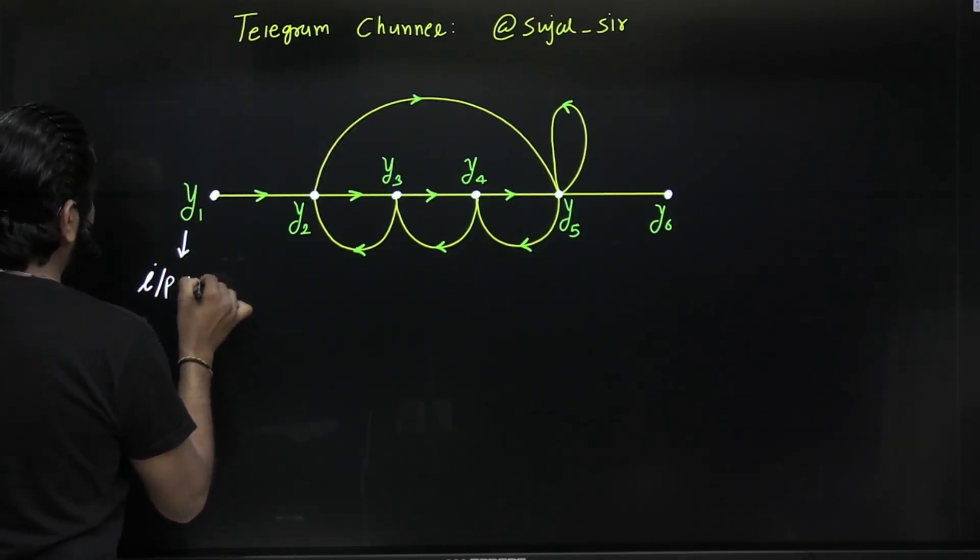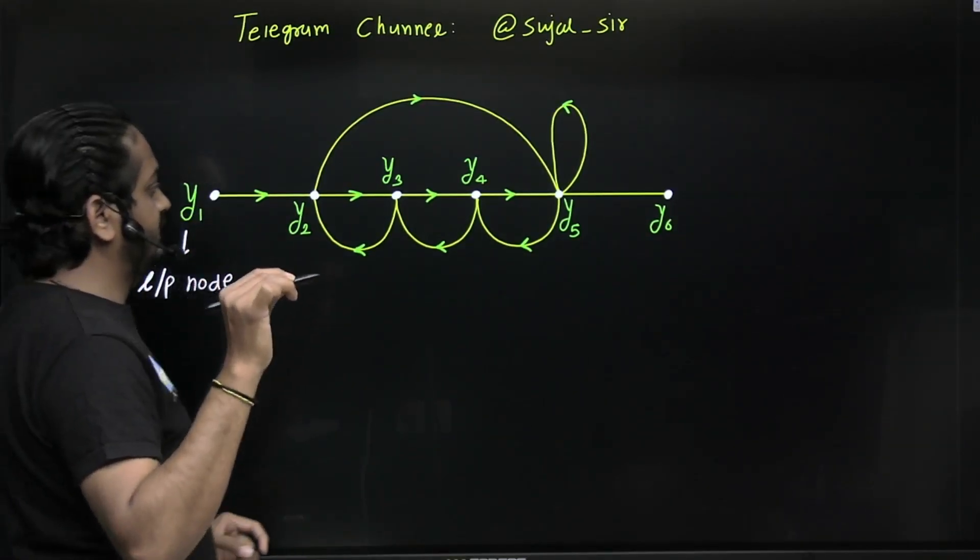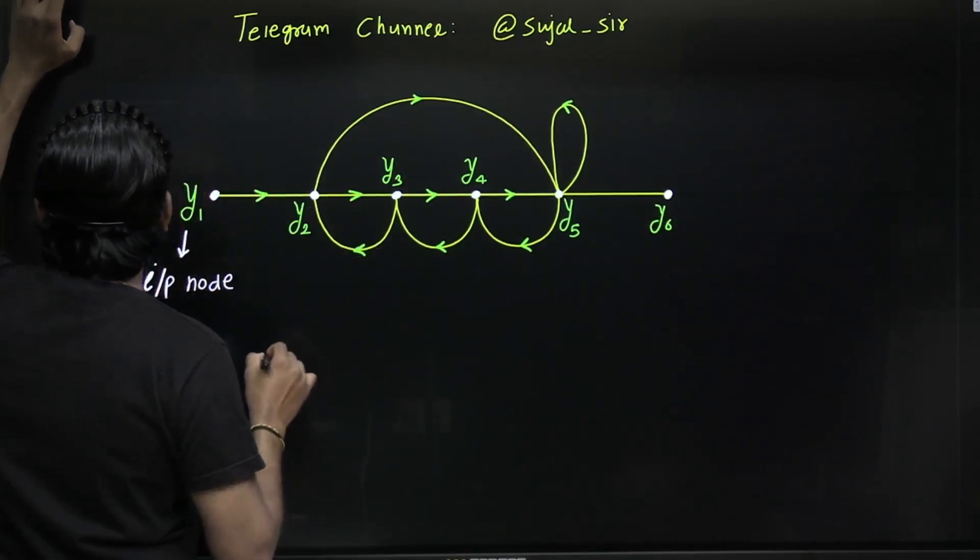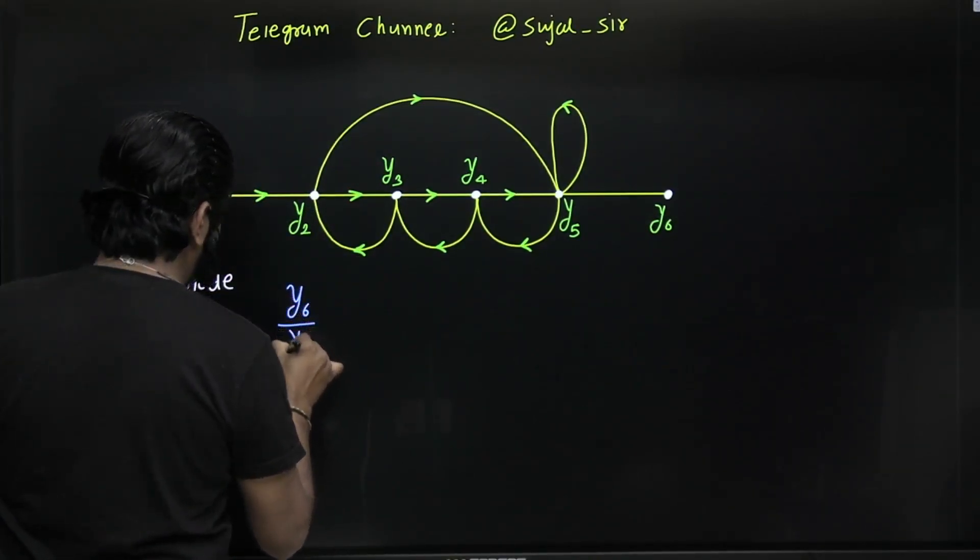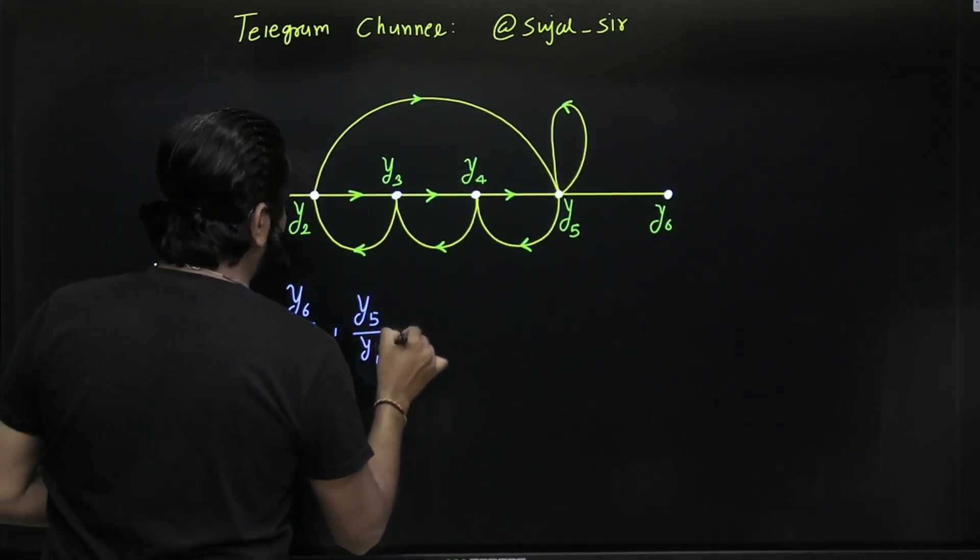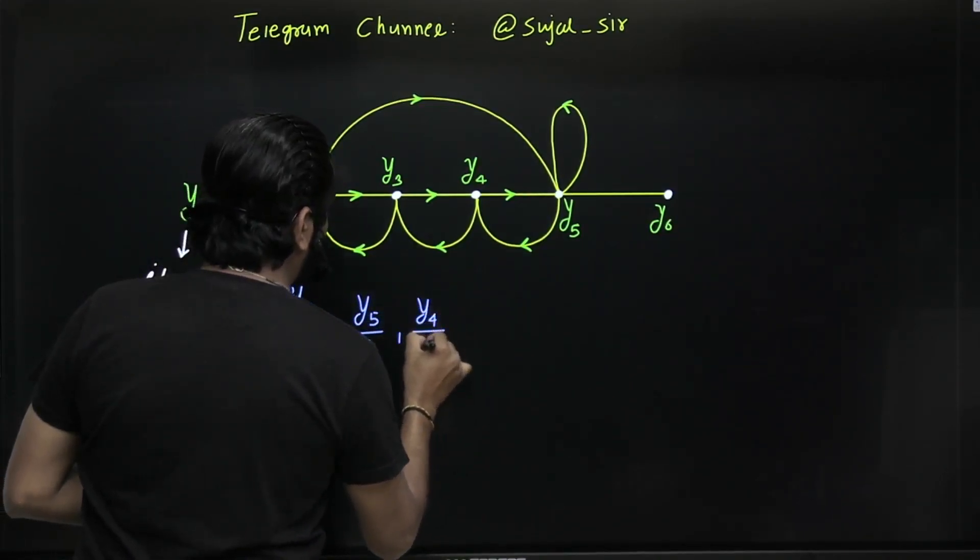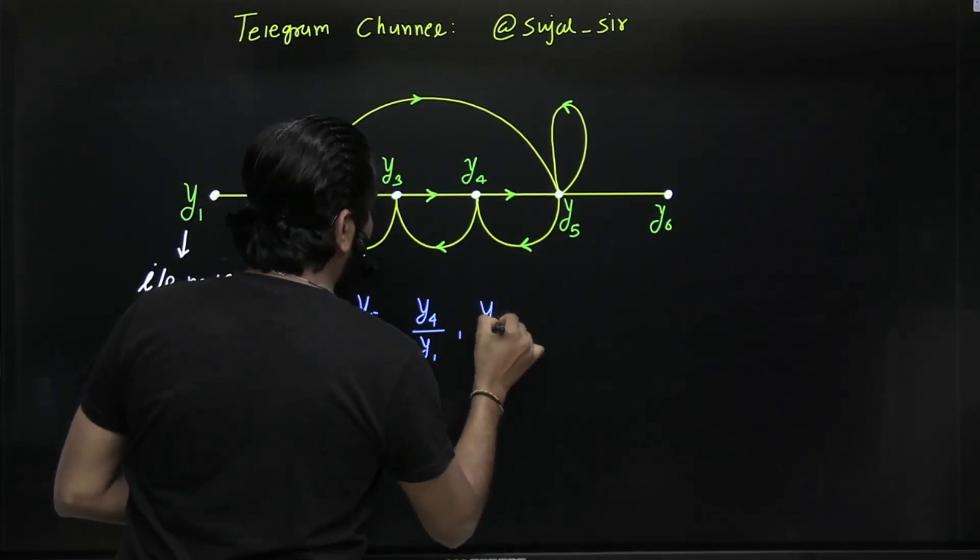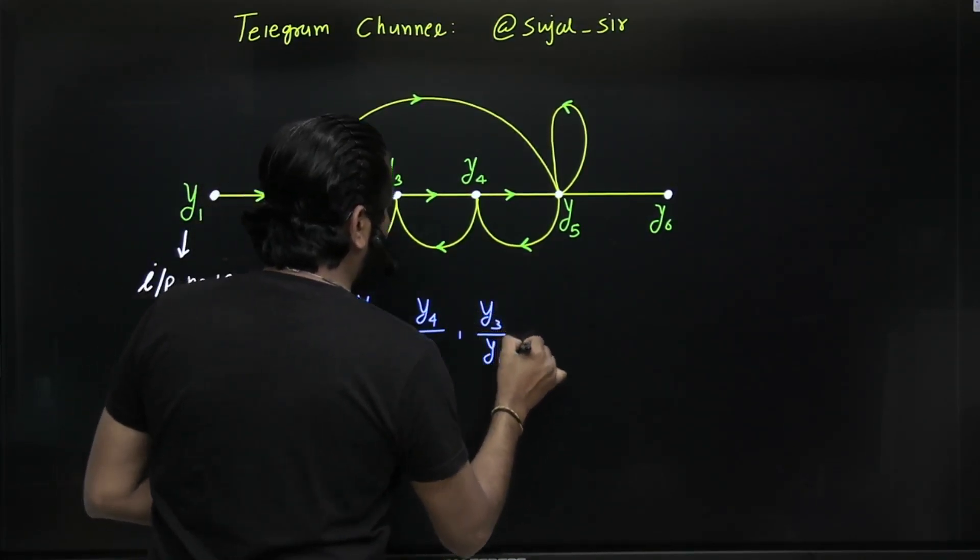So using message gain formula directly, you can find y6 by y1, or y5 by y1, y4 by y1, y3 by y1, y2 by y1. But if you want to find ratio between two middle nodes, then directly message gain formula you cannot use.